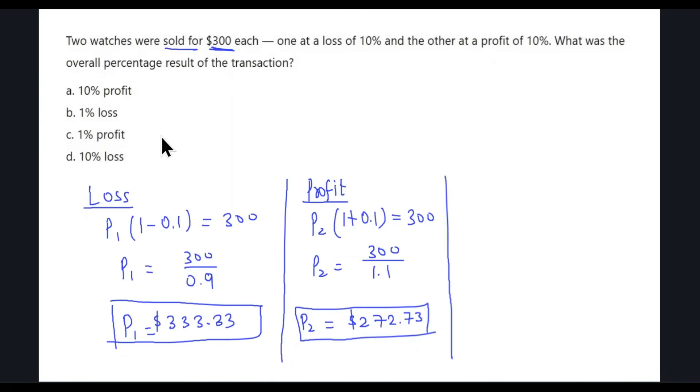What will be the profit and loss of these individual transactions? Obviously there is a loss here, and the loss will be $333.33 minus $300. That's negative $33.33. And the profit here will be $300 minus this, which is $27.23.